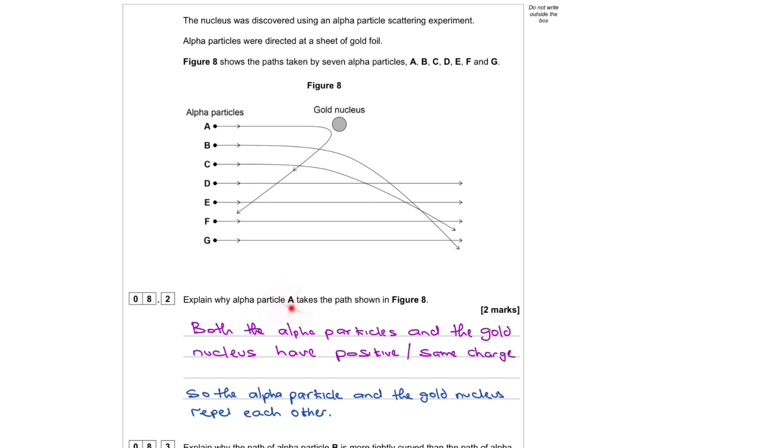Explain why alpha particle A takes the path in Figure 8. Both the alpha particles and the gold nucleus have positive charge. So the alpha particle and the gold nucleus repel each other.